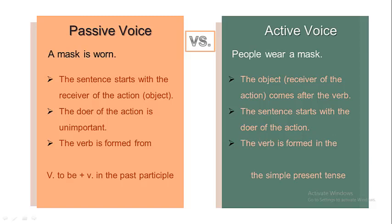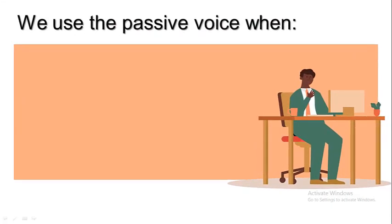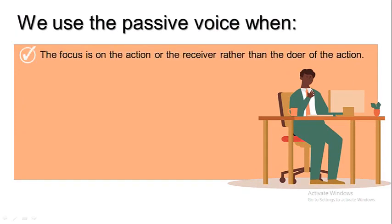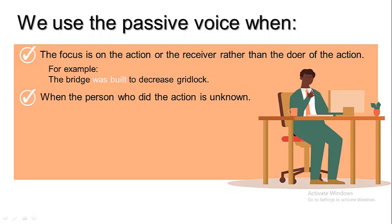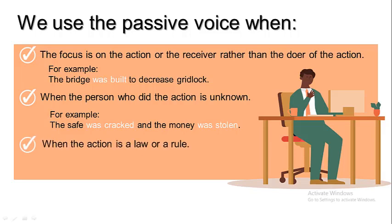So we have two voices to use in the English language: the active voice and the passive voice. We have been using the active voice for a long time, as all of our sentences were formed by the active voice. But what about the passive voice? When do we use the passive voice? We use the passive voice in these cases. First, when the focus is on the action or the receiver rather than the doer of the action. For example: the bridge was built to decrease gridlock. Here, what is important is that the bridge was built — it doesn't matter who did the action of building. Second, we use the passive form when the person who did the action is unknown. For example: the safe was cracked and the money was stolen. In this case, we don't know who cracked the safe and who stole the money, so we can't mention the doer of the action.